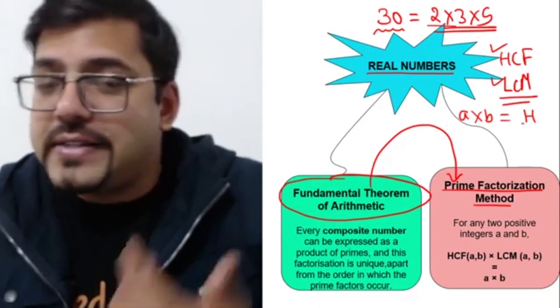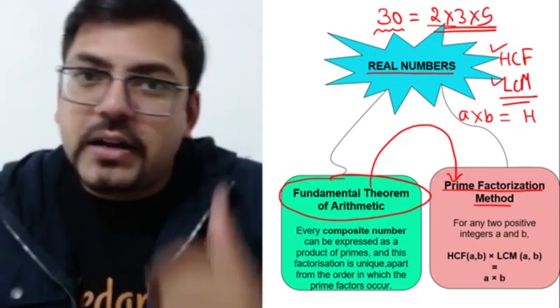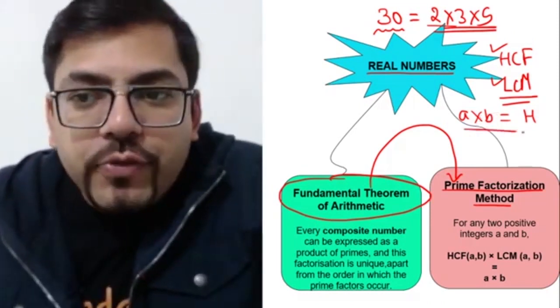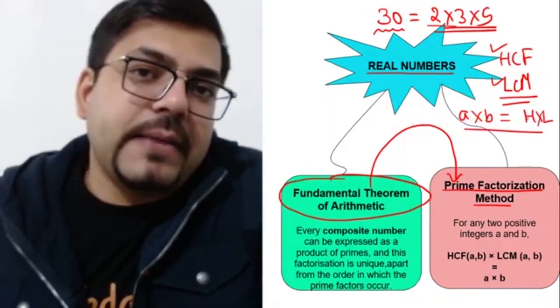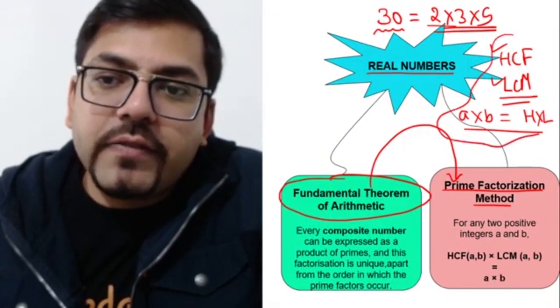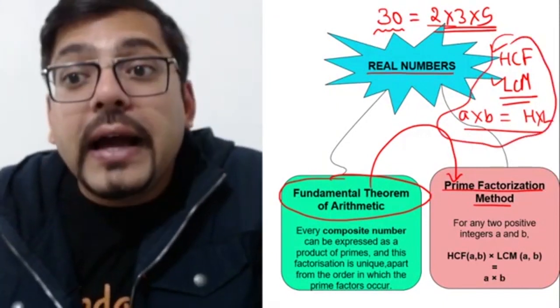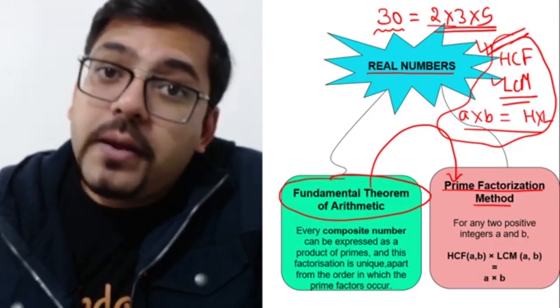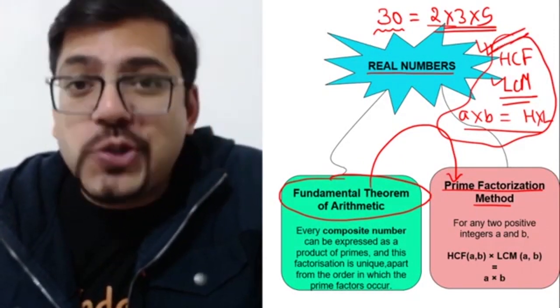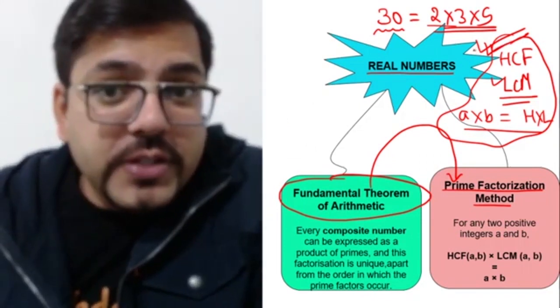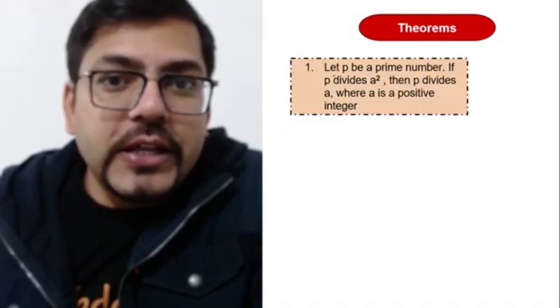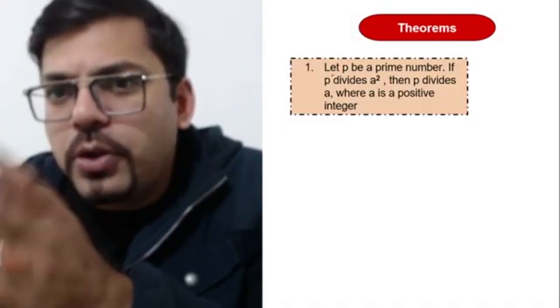And in the same fashion, relating with HCF LCM, you can even get questions like two numbers a and b are this, their HCF is given this, find the LCM. Or two numbers having HCF and LCM such and such, one of that number being x, so find the another number. So these types of questions you might expect in examination, but all of these are related with HCF and LCM only. And this year they hold very much importance why? Because again Euclid's division lemma is not there.